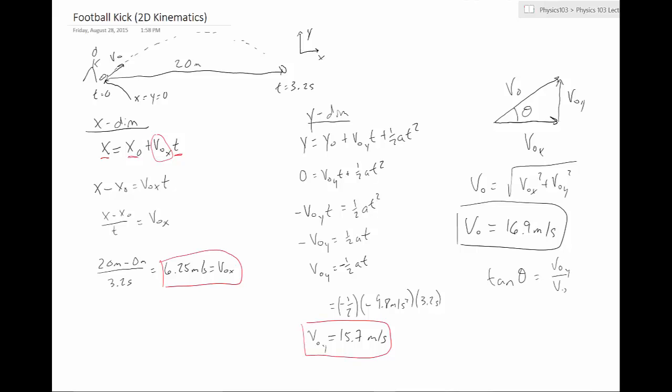We know that the tangent of theta is going to be equal to opposite over adjacent, or v zero y over v zero x. That's just going to be 15.7 over 6.25, and then we just need to take the inverse tangent of each side to get theta. So let's take the inverse tangent of that, divided by 6.25, and the inverse tangent gives us 68 degrees.